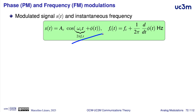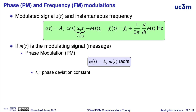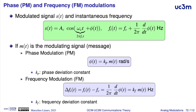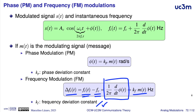Now, if we assume this notation for the argument of the carrier — the term of the frequency plus phi of t — the phase modulation is a modulation where phi of t is proportional to the modulating signal. The proportionality constant kp is called the phase deviation constant. And we have a frequency modulation when the difference between the instantaneous frequency and the carrier frequency, delta fi of t, is proportional to the modulating signal. The proportionality constant is called the frequency deviation constant, kf. This deviation of the instantaneous frequency with respect to the carrier frequency is proportional to the derivative of phi of t, divided by two times pi.